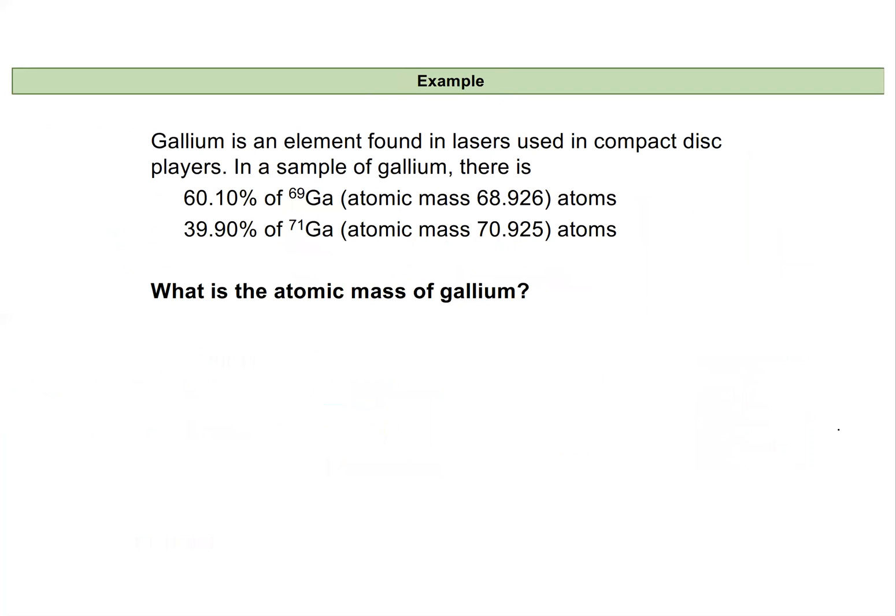Here's another example using gallium. I recommend that you pause the video and try this on your own, then I will review the solution. Try to calculate the atomic mass of gallium from the information about its isotopic masses and naturally occurring abundances.